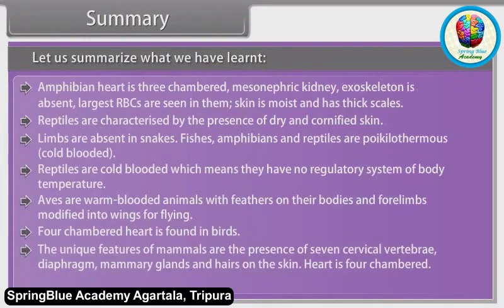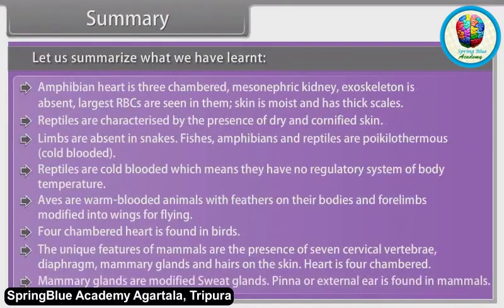The unique features of mammals are the presence of seven cervical vertebrae, diaphragm, mammary glands and hairs on the skin. Heart is four-chambered. Mammary glands are modified sweat glands. Pinna or external ear is found in mammals.